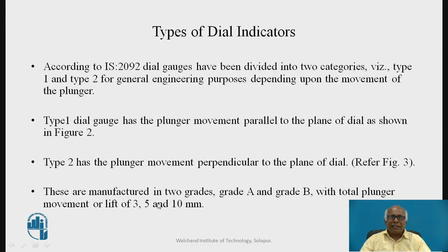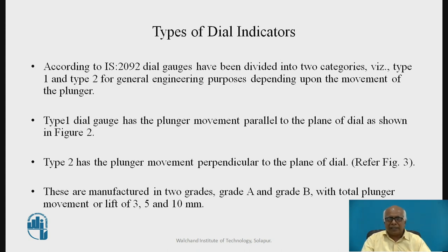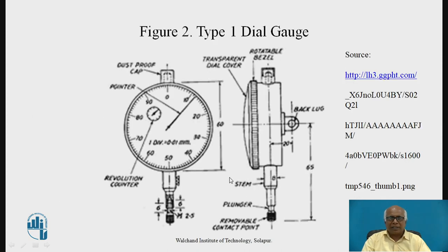These dial gauges are manufactured in two grades, grade A and grade B, with total plunger movement or lift of 3, 5, and 10 mm. These are the three different ranges available.